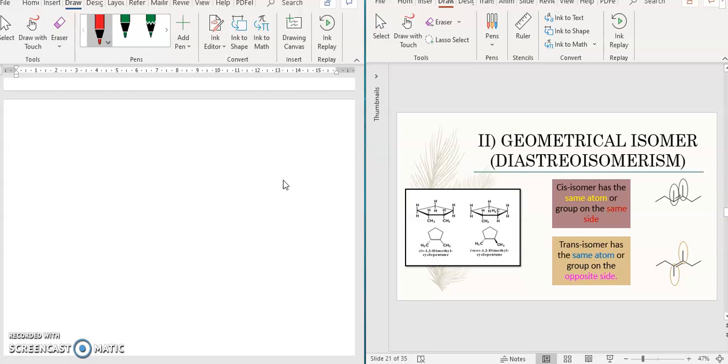For geometrical isomer, it is related to cis and trans compounds. First thing, you can identify whether the compound can form cis or trans. The first requirement is that the compound must consist of at least a double bond or cyclic structure.